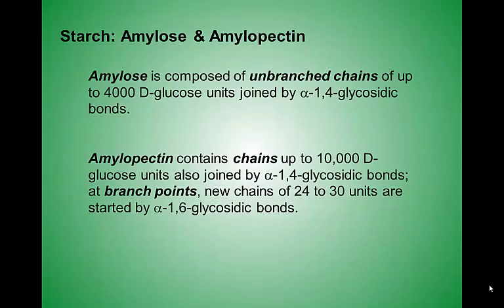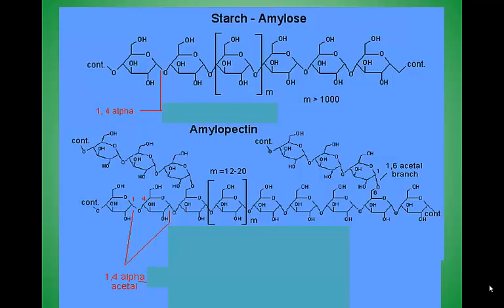We'll begin with starch, which is composed of amylose and amylopectin. Amylose is a smaller polysaccharide composed of approximately 4,000 glucose units joined by alpha glycosidic bonds. Amylopectin is a larger polysaccharide whose glucose units are also held together by alpha glycosidic bonds, but this larger polysaccharide has branch points. We can see the alpha glycosidic bond holding together glucose units in amylose and in the main chain of amylopectin, and at the branch point there is also another alpha glycosidic bond. I want you to identify the glycosidic bond and determine if it's alpha or beta.